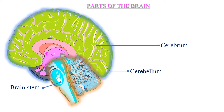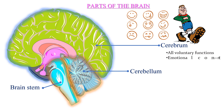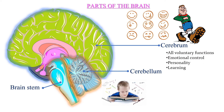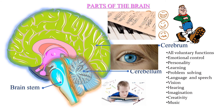The cerebrum, being the largest part of the brain, has many functions. It deals with all voluntary functions that we control ourselves, like walking, eating, and running. It also handles emotional control, personality, learning, problem solving, language and speech, vision, hearing, imagination, creativity, and music.